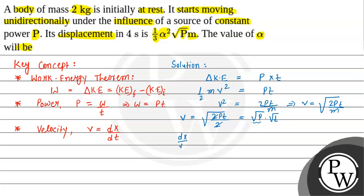Since v equals dx over dt, we can write dx equals square root of p times t to the power half dt. We will integrate this to find the displacement. Square root of p is constant, and since displacement is at 4 seconds, we integrate from 0 to 4.